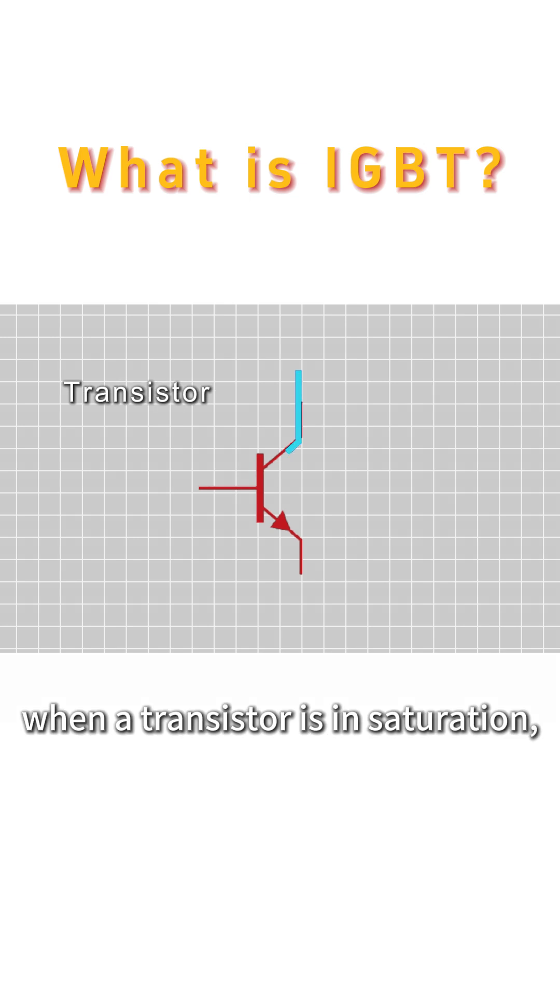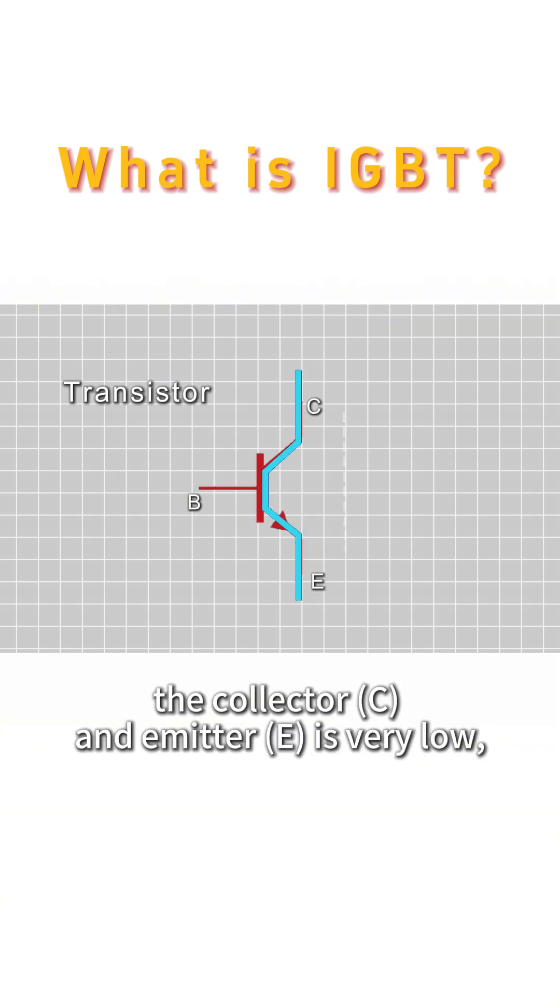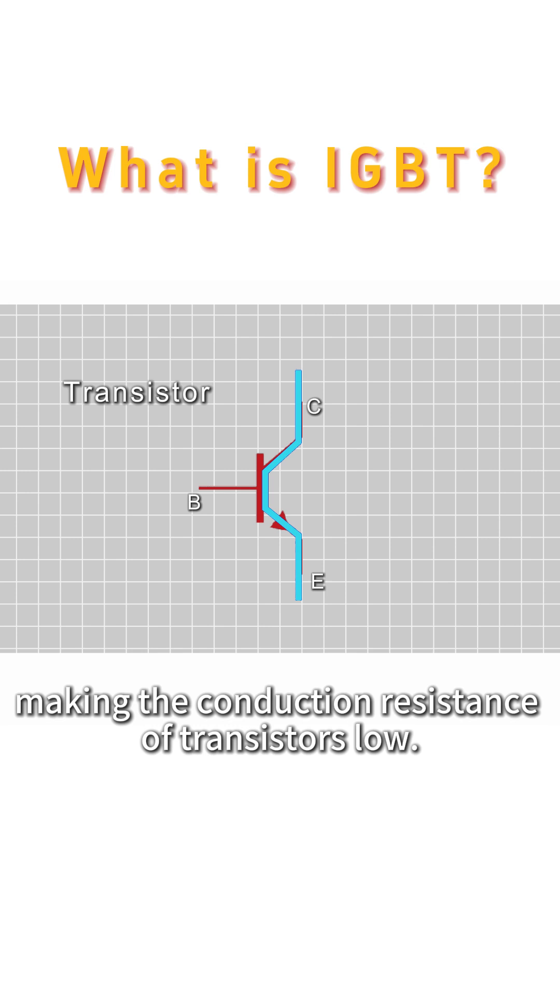On the other hand, when a transistor is in saturation, the resistance between the collector and emitter is very low, making the conduction resistance of transistors low.